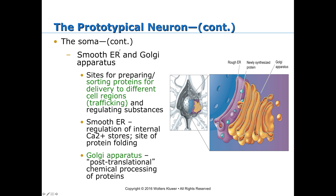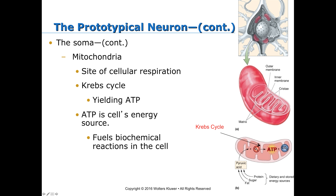Still within the soma: the smooth ER and the Golgi apparatus are sites for preparing and sorting proteins for delivery to different cell regions and for regulating substances. The smooth ER has a role in regulation of internal calcium stores and is also a site of protein folding. The Golgi apparatus plays a role in post-translational processing of proteins. The soma also contains mitochondria, which are the sites of cellular respiration — through the Krebs cycle we obtain ATP, the cell's energy source. ATP is going to be very important when we talk about pumps in the nervous system, like the sodium-potassium pump.